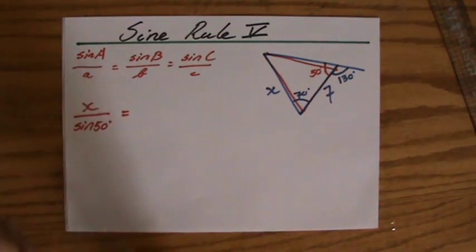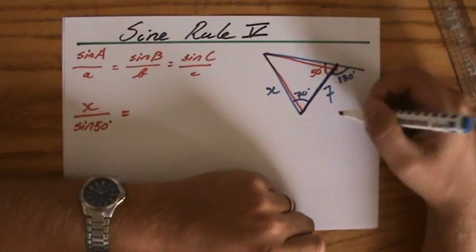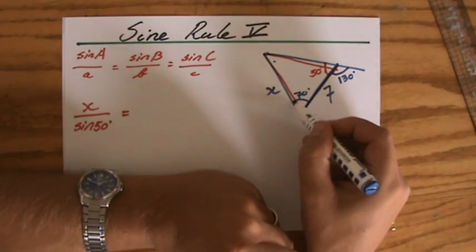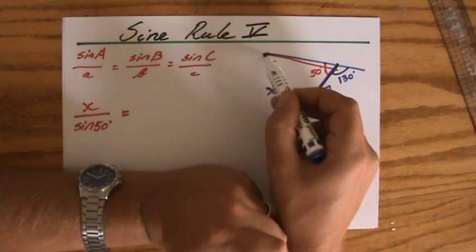Well, they give me a length here, which is 7, but I don't know his teammate angle. And they give me an angle here, but I don't know its teammate length.